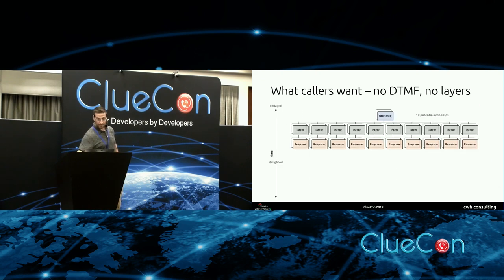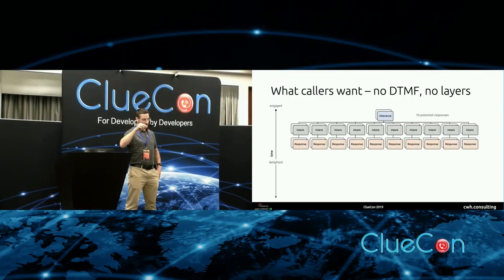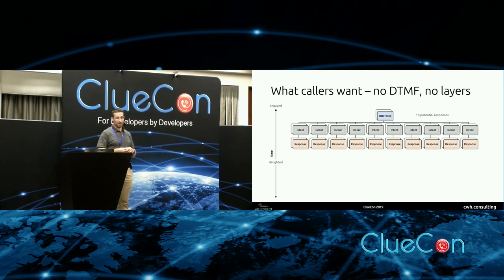What we really want is a really flat hierarchy where you don't have to go through all that. Imagine calling a grocery store to find out if they have soy milk — you just want to call up and say, 'Do you have soy milk?' You don't want to navigate through a dairy category and sub-dairy items. What you really want is a flat system that can just understand what you're trying to say, look up the right information, and give you a response.